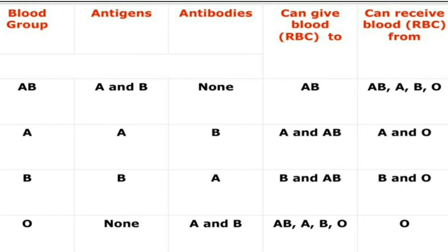Blood group B person can donate to blood group B and blood group AB persons, and can receive blood from blood group B and O persons. Blood group AB can donate blood only to blood group AB, because AB has both antigens A and B, and all other blood groups have antibodies that can react with these antigens. However, AB person can receive from AB, blood group A, blood group B, and blood group O as well, because AB blood group does not have any antibodies, so no clumping will take place.